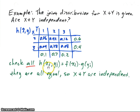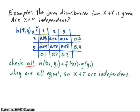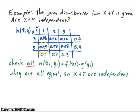We have to check all the values to see if H(x_i, y_j) equals f(x_i) times g(y_j). For X equals 2 and Y equals 1, we have 0.06 in the table — 0.1 times 0.6 gives 0.06, so that checks. For X equals 2 and Y equals 2, we have 0.42 — 0.7 times 0.6 equals 0.42, checks. For X equals 2 and Y equals 3, we have 0.12 — 0.6 times 0.2 equals 0.12, checks. Then 0.1 times 0.4 gives 0.04, 0.7 times 0.4 gives 0.28, and 0.2 times 0.4 gives 0.08 — all correct.